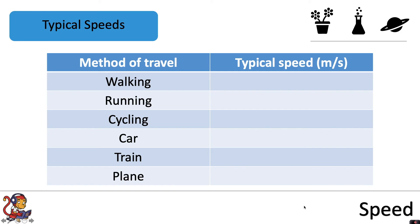Some typical speeds you need to be aware of: the typical speed of somebody walking is 1.5 meters per second; running is 3 meters per second; cycling increases to 6 meters per second; in a car you might be traveling at around 25 meters per second; a train will typically travel at 55 meters per second; and in a plane you'll be going much faster at around 250 meters per second.